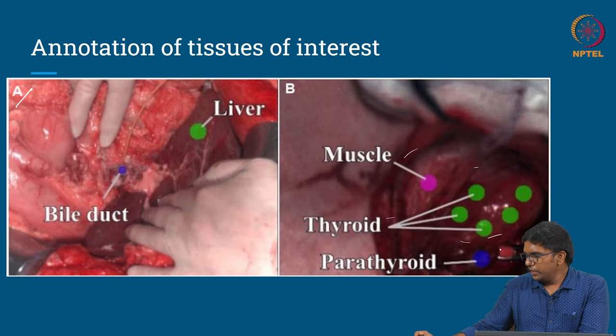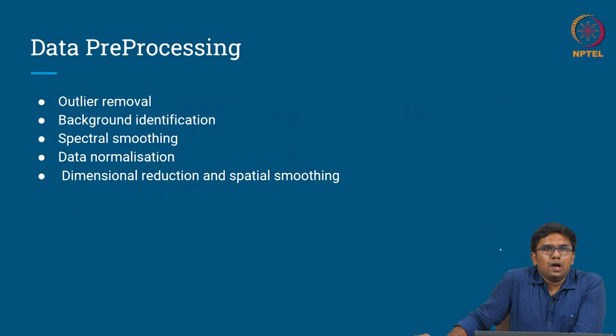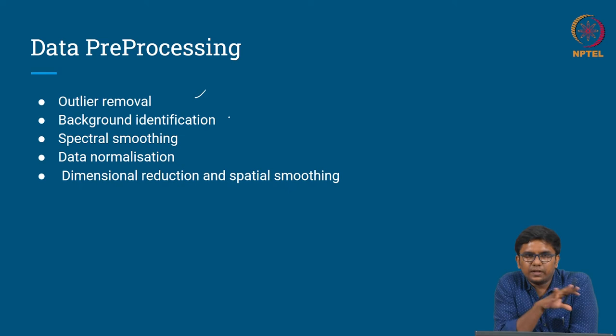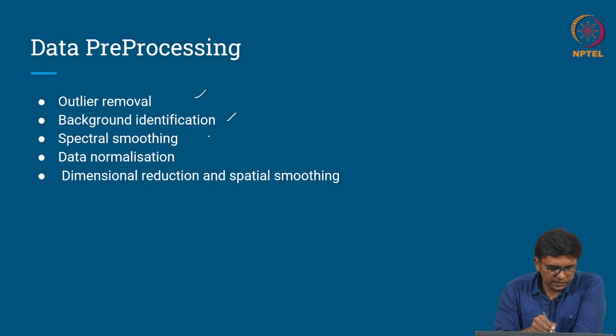They have not done complete annotations because it is an extensively laborious task. In preprocessing, they first remove outliers, develop a system for foreground identification of structures in the foreground while ignoring the background, and perform spectral smoothing, data normalization, dimensional reduction, and spatial smoothing.